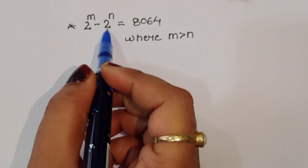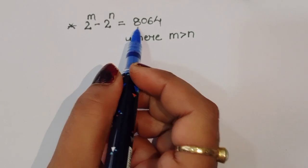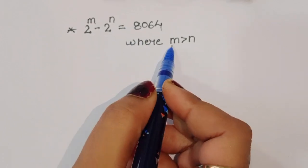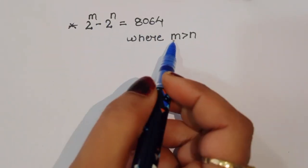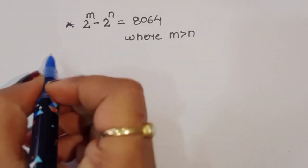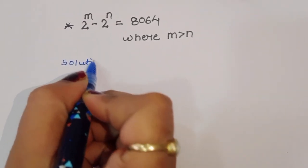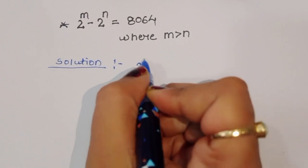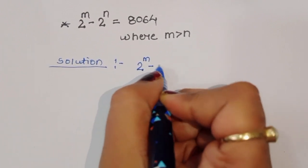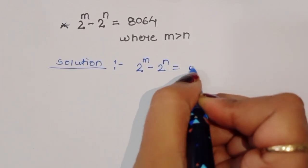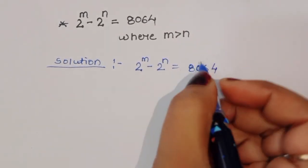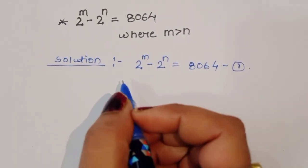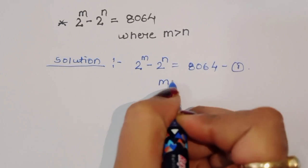The question is: given 2 power m minus 2 power n is equal to 8064, we have to find out the value of m and n, where the condition is m is greater than n. Let's see the solution.